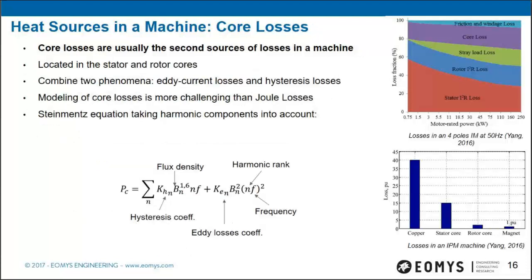Core losses are usually the second source of losses and are located directly on the stator and rotor cores. They combine two phenomena: eddy current and hysteresis losses. Their modeling is more challenging than Joule losses and remains an active research topic. The stator equation takes harmonic components into account, with a hysteresis loss term on the left and an eddy current loss term on the right.